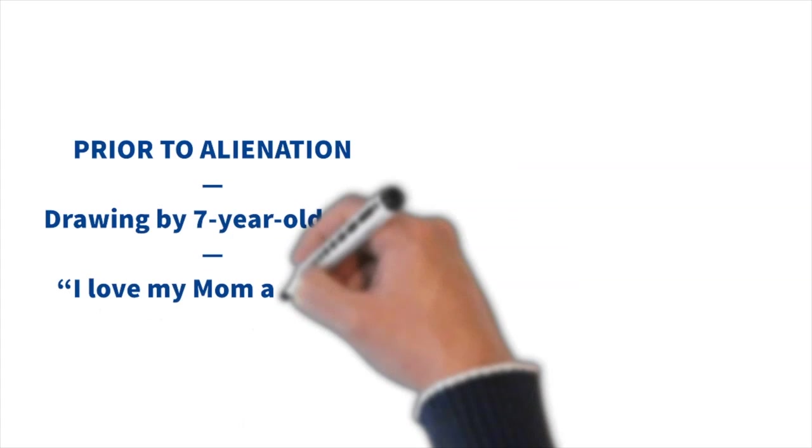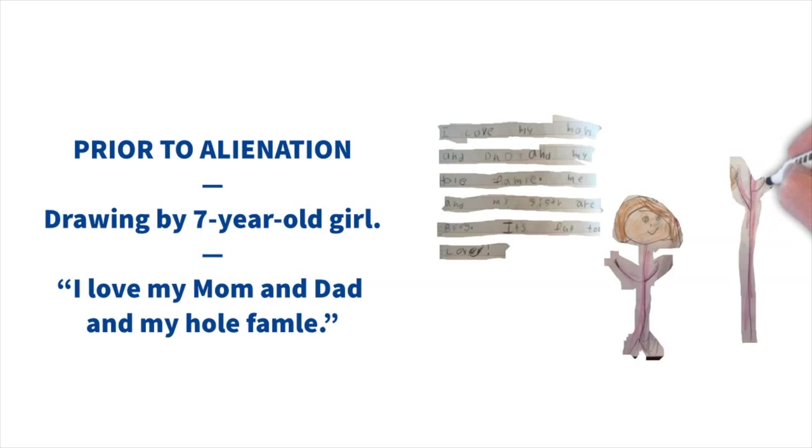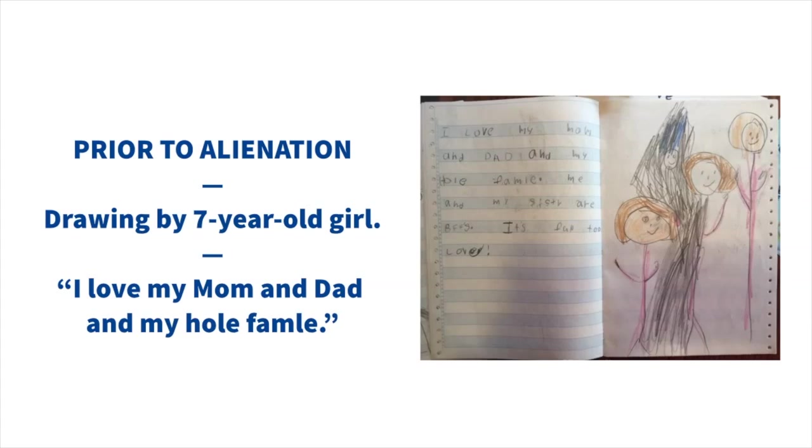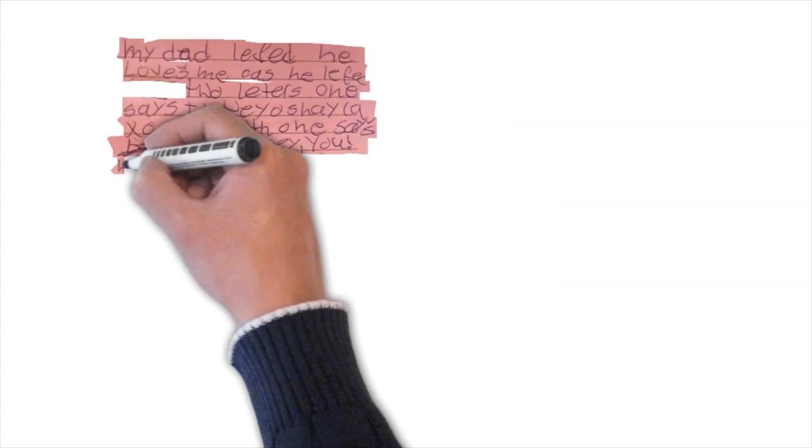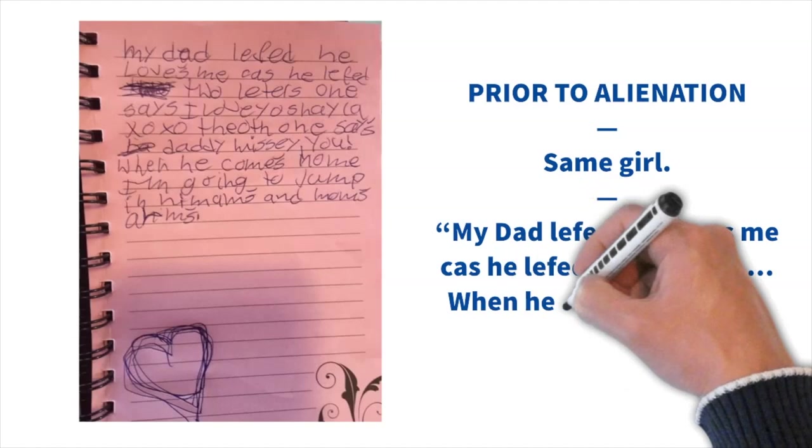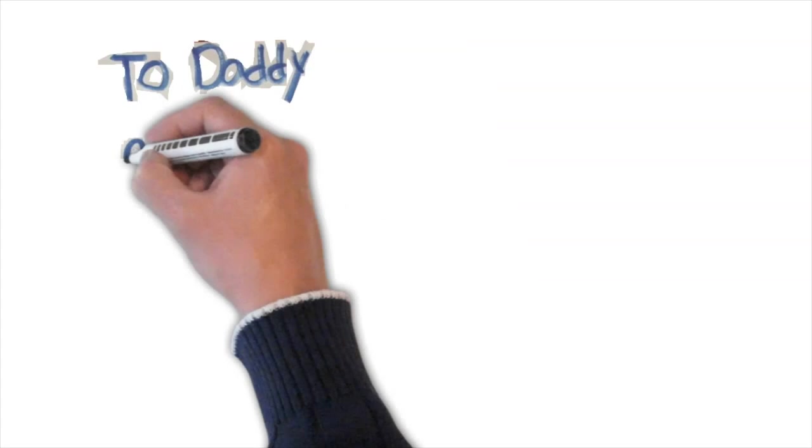Before alienation, a drawing by a seven-year-old girl. I love my mom and dad and my whole family. Me and my sister are BFFs. It's fun to love. Same girl. My dad left. He loves me because he left two letters. When he comes home, I'm going to jump in his arms and mom's arms.